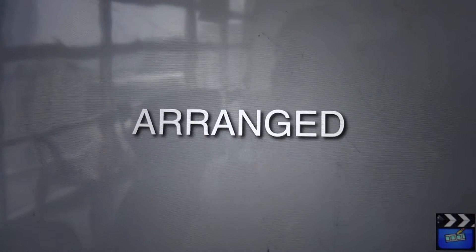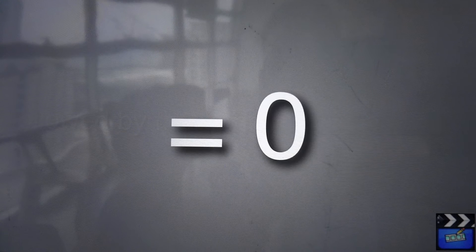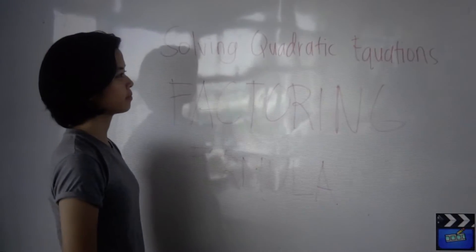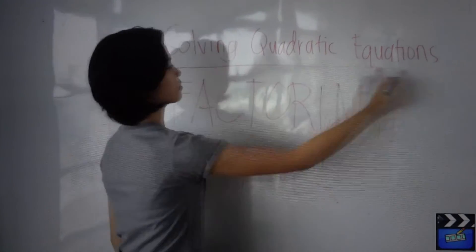Usually they are arranged so that the squared term goes first, then the term with the variable, and then some constant, while the right side is equal to zero. In your test, a, b, and c will be actual numbers.